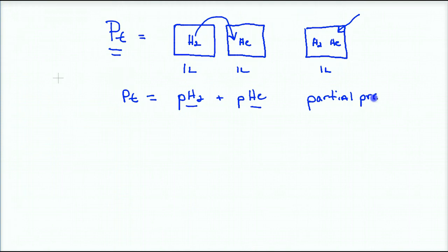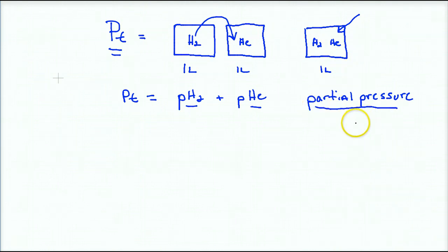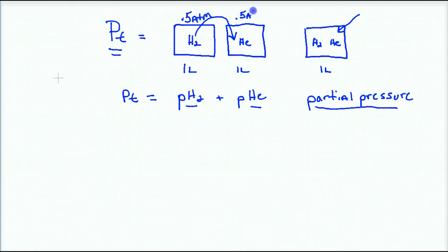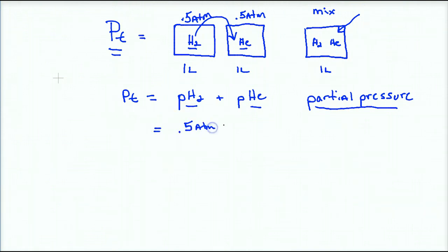A partial pressure, by definition, is the pressure of a gas in a mixture that would be the pressure if all the other gases weren't there. So let's pretend there was 0.5 atm in the hydrogen container and 0.5 atm in the helium container — the same pressure because they're the same number of particles. Pressure is due to collisions. If I mix them together, 0.5 atm plus 0.5 atm equals a pressure total of 1 atm.